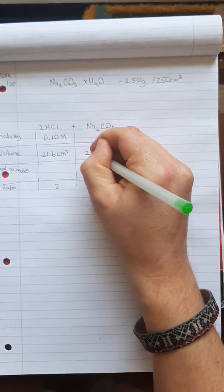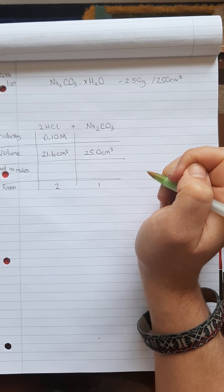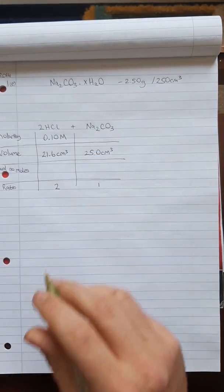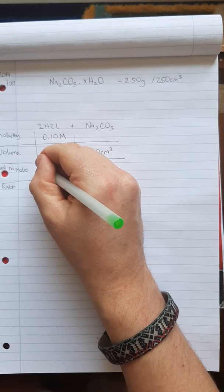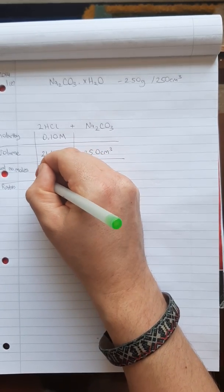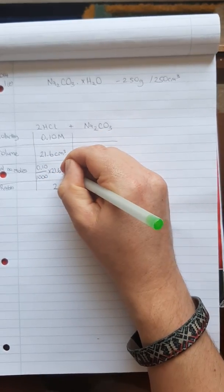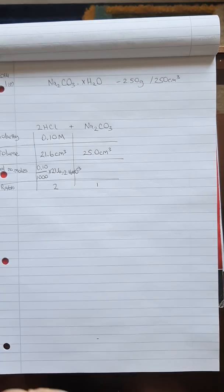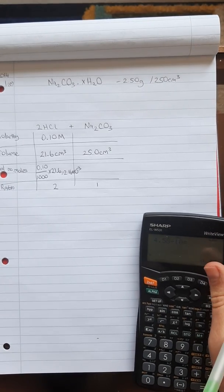From the question, the average titration volume of hydrochloric acid is 21.6 cm³, and 25.0 cm³ of the sodium carbonate solution was used. So we calculate: 0.10 moles per litre divided by 1000 to get moles per cm³, then multiplied by 21.6, and we get 2.16 × 10⁻³. That is the actual number of moles of hydrochloric acid present in the 21.6 cm³ of HCl.